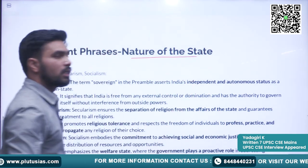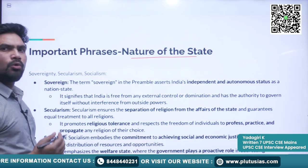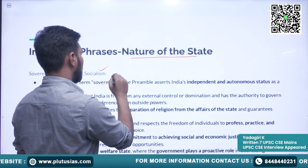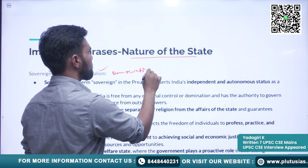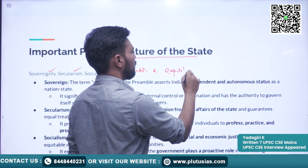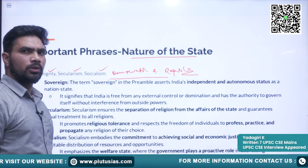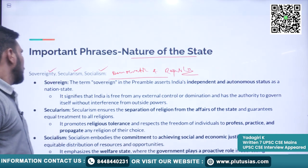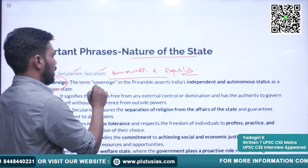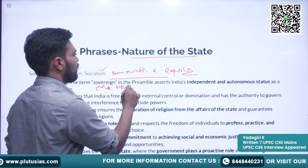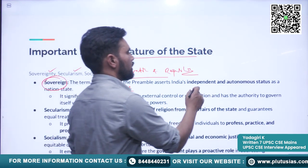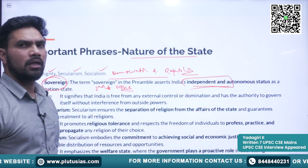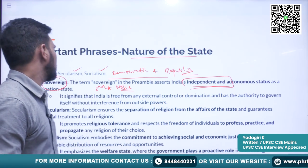The third phrase is about the nature of the state. Through the five words — sovereignty, socialism, secularism, democratic, and republic — we come to know about the nature of the Indian state. Sovereign means India is second to none; nobody is above the government of India. India is an independent country with no external control. Secularism means separation of religion from affairs of the state.